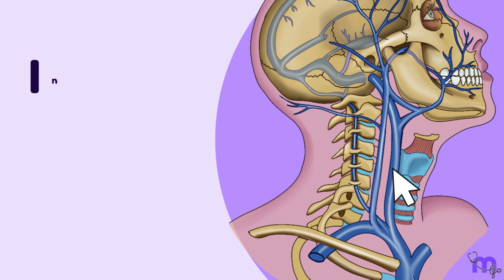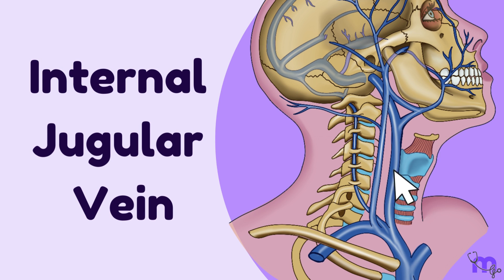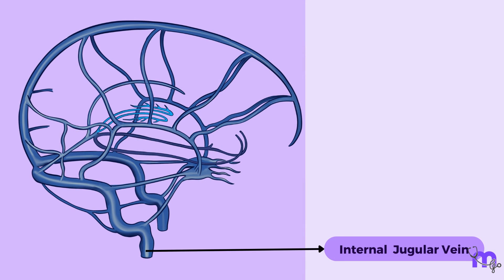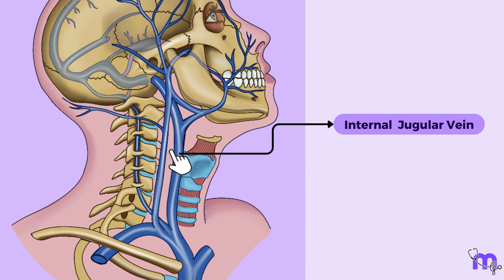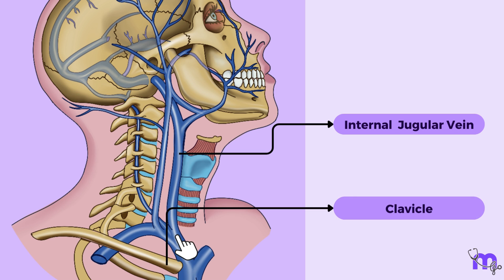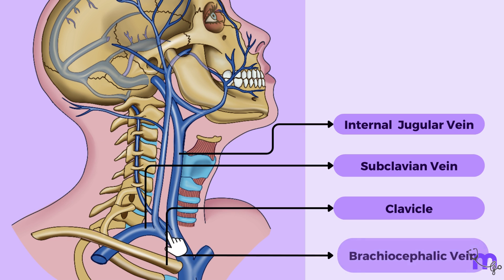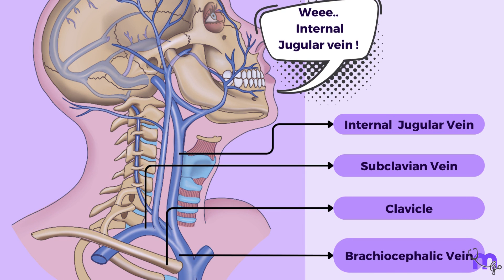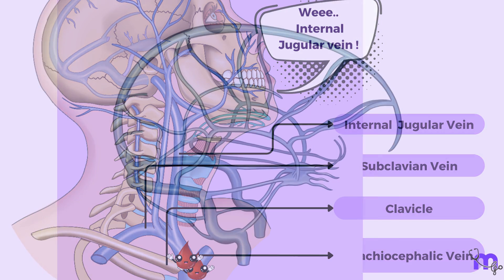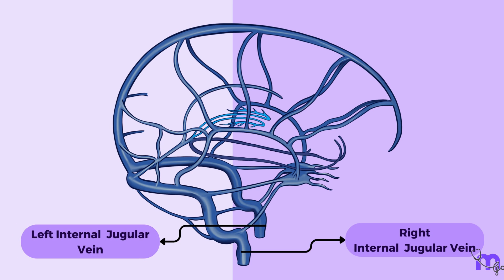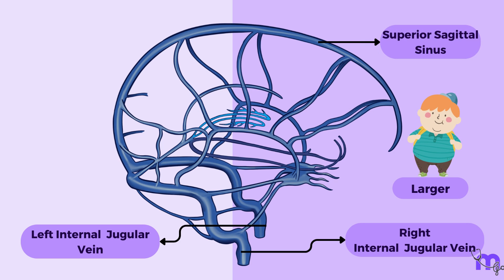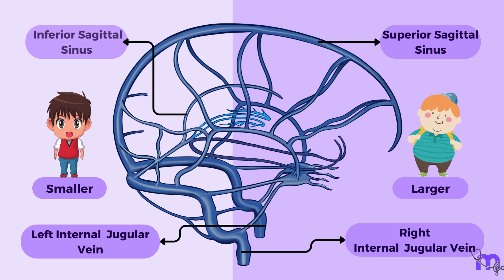Let us explore the internal jugular vein, the largest vein in the neck. It originates as the continuation of the sigmoid sinus at the base of the skull, just below the jugular foramen. It descends vertically downwards to end behind the sternal end of the clavicle, where it joins the subclavian vein to form the brachiocephalic vein. A significant anatomical difference between the right and left internal jugular veins is that the right one is typically larger due to its drainage of the larger superior sagittal sinus, while the left one drains the smaller inferior sagittal sinus.